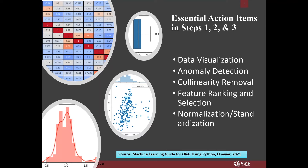Feature ranking and selection is a pretty important next step. You can use different tree-based algorithms — decision trees, random forest, gradient boosting, extra trees — to do feature ranking on your parameters. Feature ranking helps you understand which features have the highest impact on the model output. Features that fall at the bottom of the tree can be removed from your analysis because you don't need them.